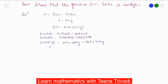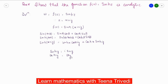Now we use the relation between circular and hyperbolic functions: sinh(iy) = i·sin(y) and cosh(iy) = cos(y). These are the standard relations we will apply here.